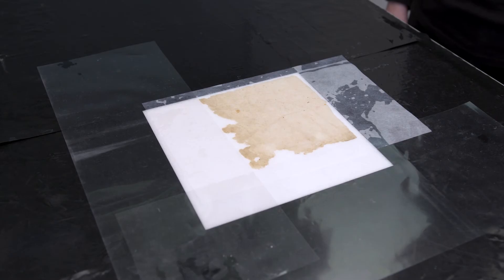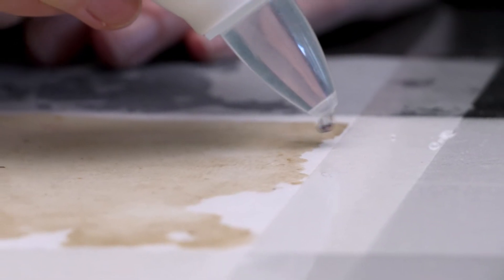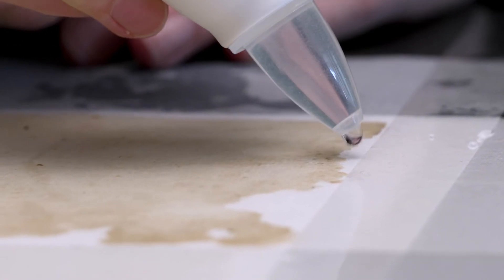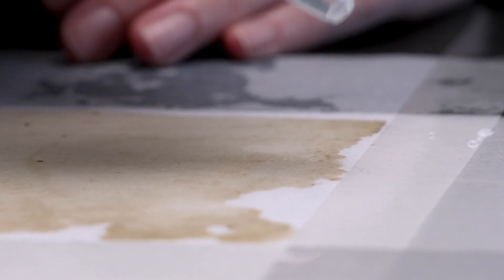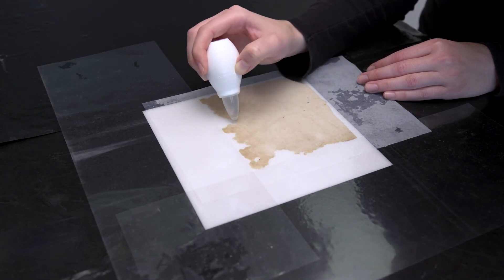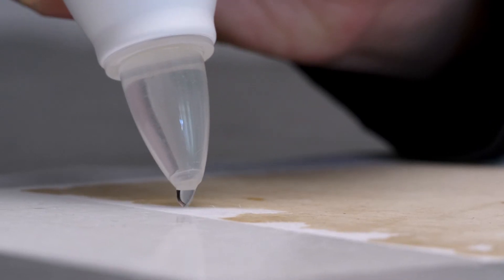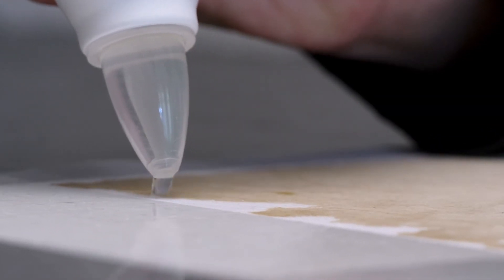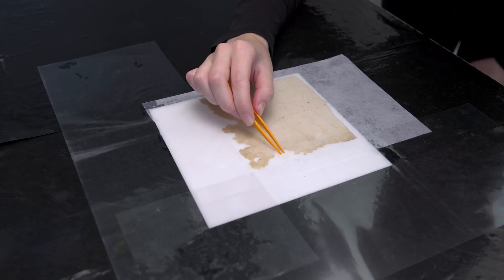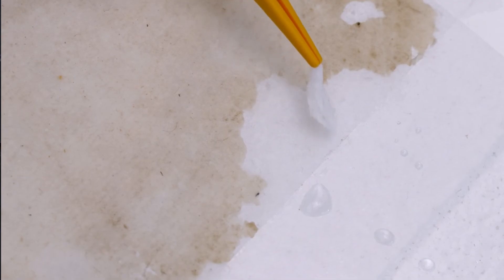The vacuum table is switched on and the fiber suspension is applied on the open areas. Due to the negative pressure, the fibers only accumulate on the exposed areas. Large clumps of fiber can be removed using tweezers.